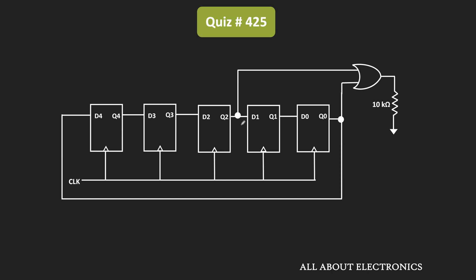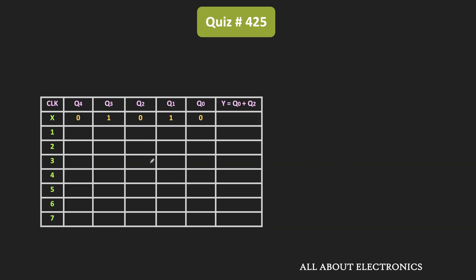We have a serial-in parallel-out shift register where Q2 and Q0 outputs are logically ORed. Let the output of the OR gate be Y, so Y equals Q2 plus Q0. Whenever any one of these outputs is high, Y becomes 1. The initial content of all flip-flops is 0, 1, 0, 1, 0. To find average power across resistor R, we first need to find the pattern of output Y and determine after how many clock cycles the same pattern repeats. Initially, Y equals Q0 plus Q2, which equals 0.